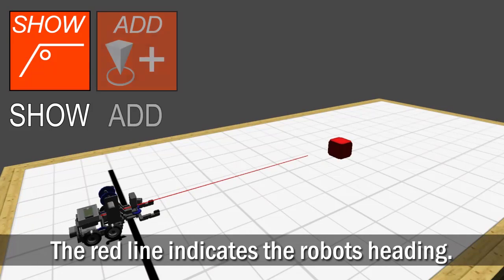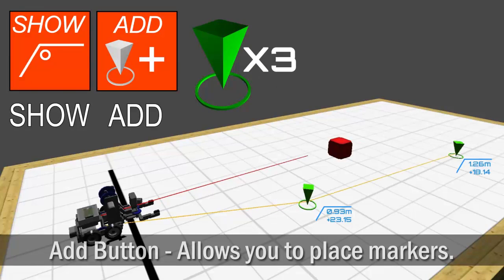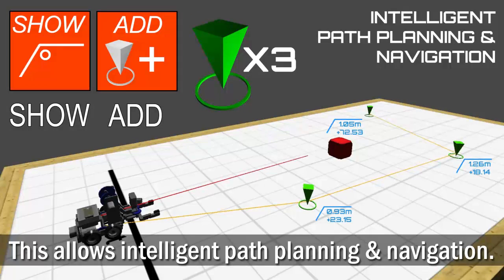Once the toolkit is turned on, pressing the Add button allows you to place markers in the world. You can place up to three sequential markers, allowing intelligent path planning and navigation of the environment.